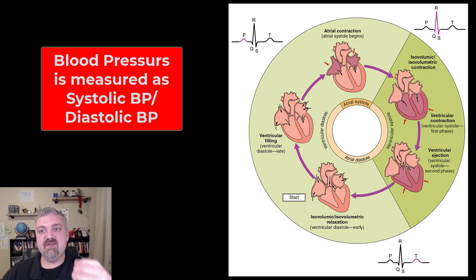Systole means contraction. So your systolic blood pressure is the pressure as the blood is actively flowing through your circulatory system. Diastolic blood pressure is when it's resting. We'll cover blood pressure in a separate video.